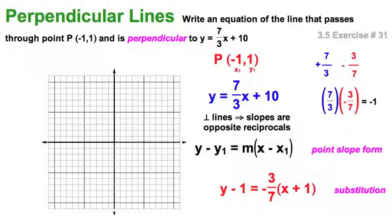Remember, x1 is negative 1, y1 is positive 1. So, when I follow the form of the line, I substitute y minus 1 equals negative 3 sevenths times the quantity x minus negative 1, or x plus 1. If you want to see the graphs,